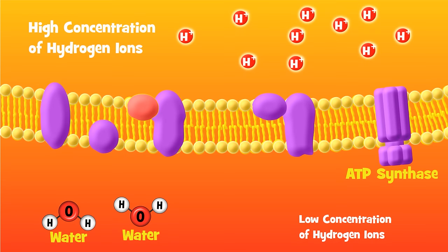So, these hydrogen ions, in a manner of speaking, want to flow from the high concentration area of the intermembrane space to the low concentration area, the matrix. But they can only get through ATP synthase.